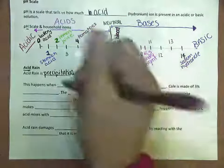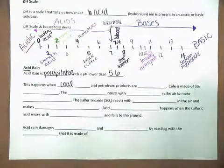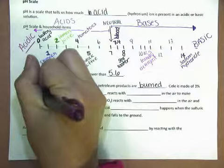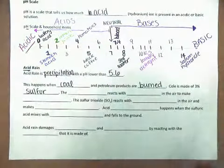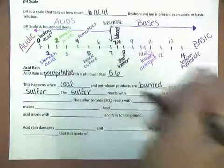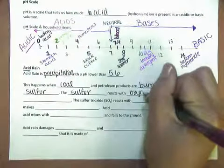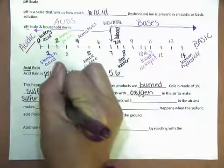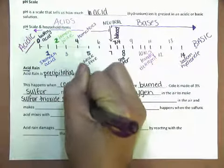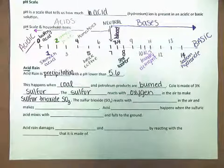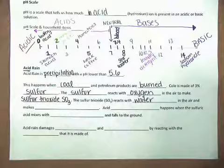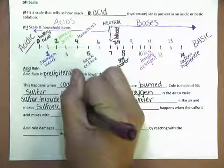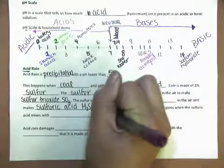This happens when coal and petroleum products are burned. Coal is made of 3% sulfur. That's important because the sulfur reacts with oxygen in the air to make sulfur trioxide, which is written as SO3. The sulfur trioxide reacts with water in the air and makes sulfuric acid, which is H2SO4.